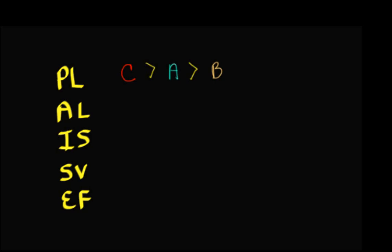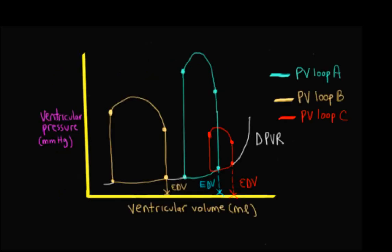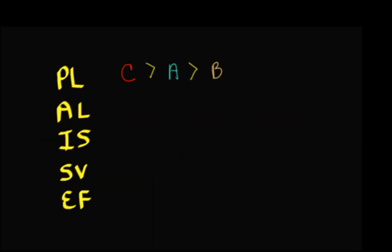Now let's look at afterload — the wall stress in the ventricle during ejection — by examining the end systolic pressure for each loop. The end systolic pressure for PV loop C is the lowest, for PV loop B it's a little higher, and for PV loop A it's the highest. So comparing afterloads: A is greater than B is greater than C.